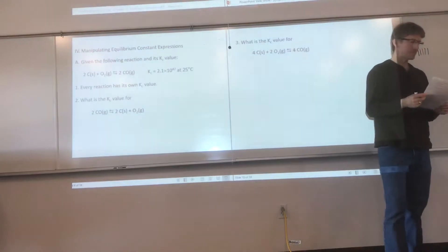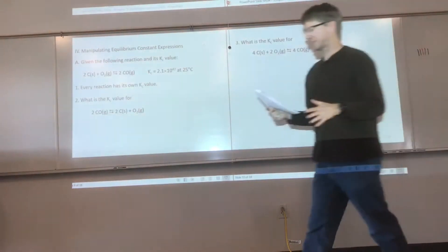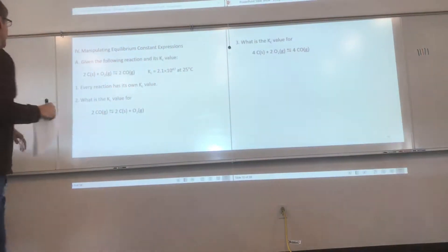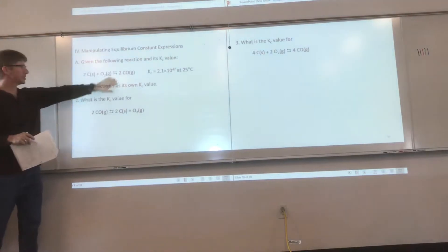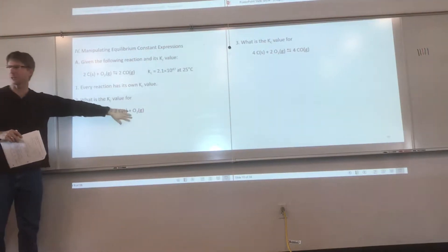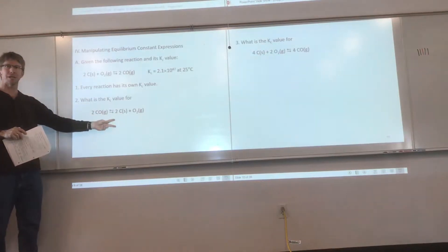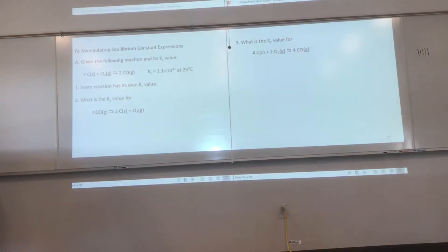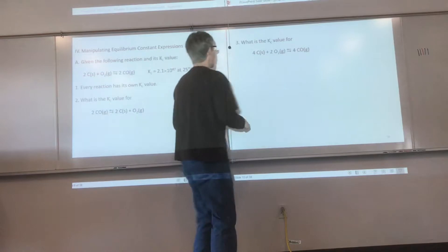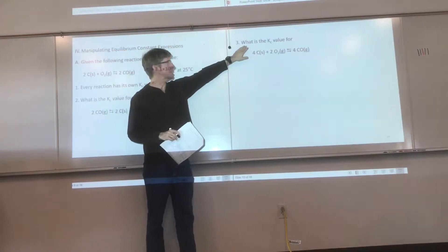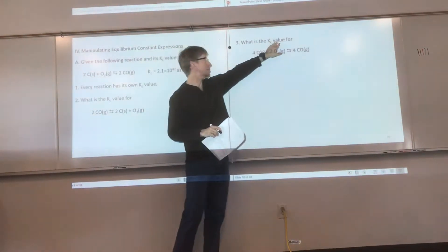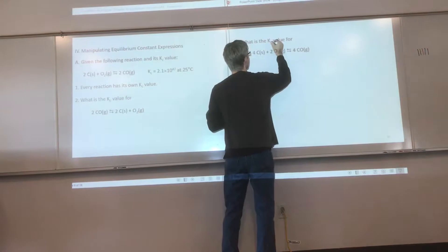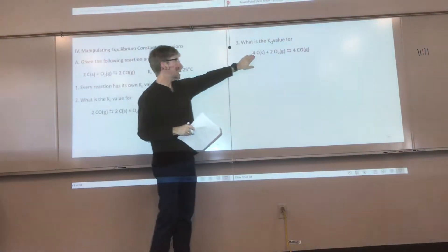Where we left off, we were starting to manipulate equilibrium constant expressions, and we left off on page 9. We said that if you switch the reactants and products—flip or reverse—it's the reciprocal of the K value. Any questions before we move on to new material? Then we'll move on. It says what is the Kc value for—I'll call this Kc2.